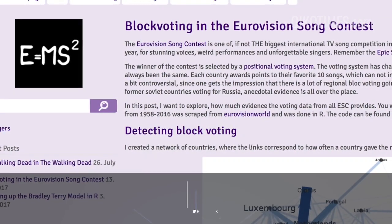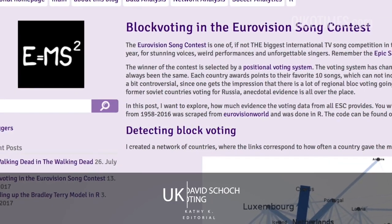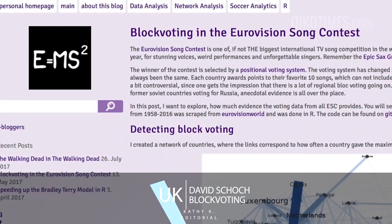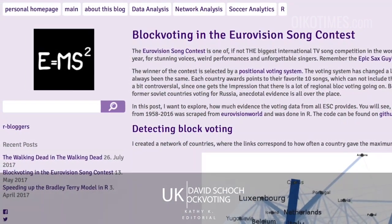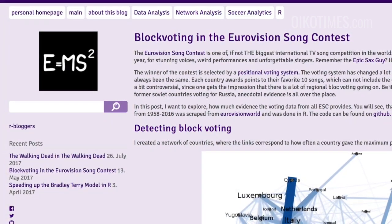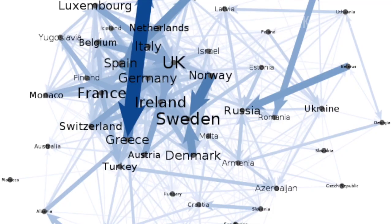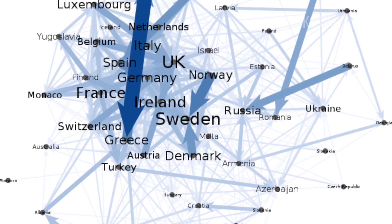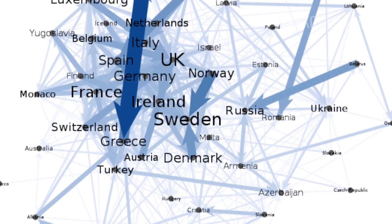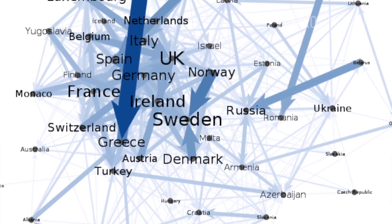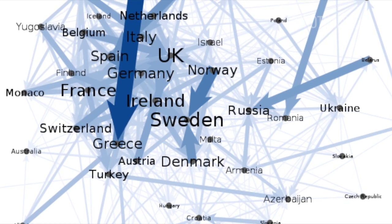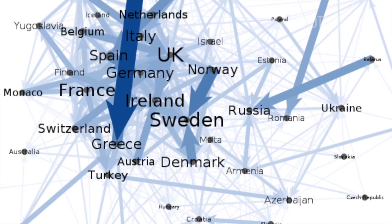David Schock is a researcher in network analysis at the University of Manchester. He created a network of countries where the links correspond to how often a country gave the maximum points to another. To detect the blocks, he used a graph clustering algorithm based on modularity maximization — the goal being to find groups of countries that have a lot of strong links among them and very few outside of the group.